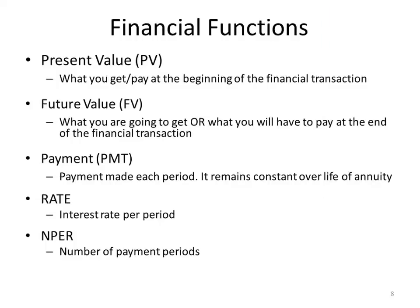The financial functions we're going to use in this class are: the present value function, PV — that's what you get or pay at the beginning of the financial transaction; the future value function, FV — what you're going to get or have to pay at the end of the transaction; the payment function, PMT — the payment made each period, which must remain constant over the life of the annuity; the rate function — the interest rate per period; and the NPER function — the number of payment periods.